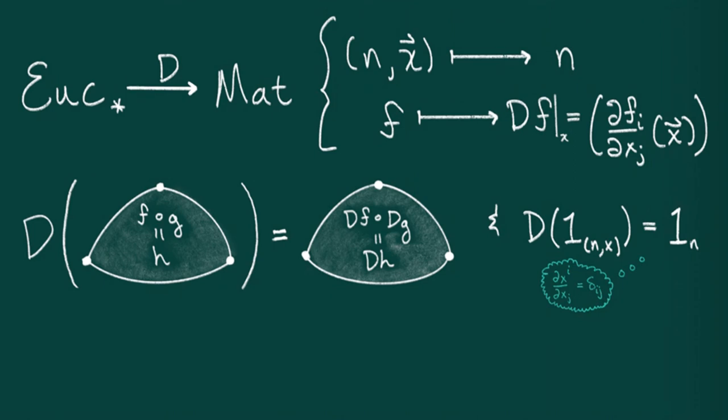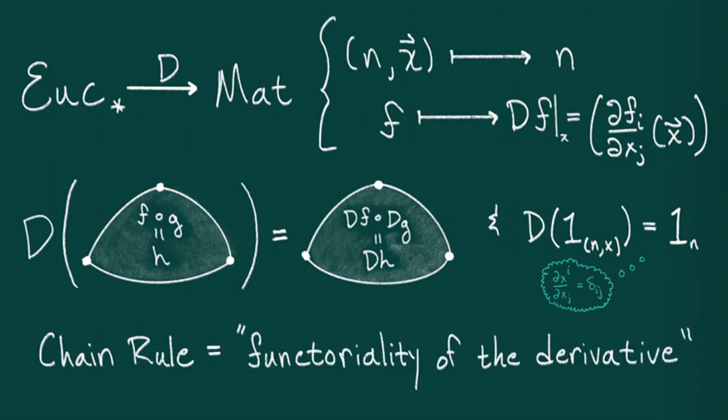So category theory is like swarming with cryptic aphorisms, commonly referred to as slogans. I'll end with one of the more famous aphorisms, which I'll put in scare quotes because it will involve a word I have yet to define. Namely, the chain rule expresses the functoriality of the derivative.